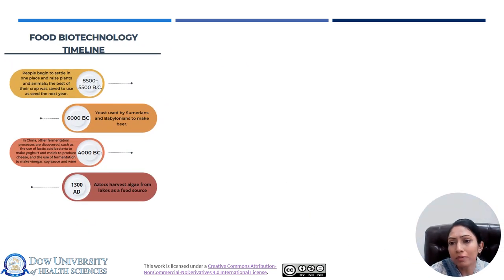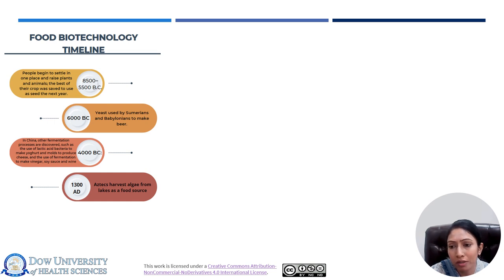Very early examples of food biotechnology date back to around 10,500 years ago when people began to save the best of their crops to use as seed for the next year. Around 6,000 years ago, the process of fermentation was discovered and people started to use lactic acid bacteria to make yogurt and molds to produce cheese. They also started to use fermentation for the production of vinegar, soy sauce, and wine.